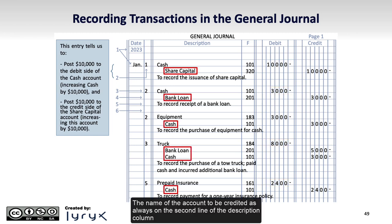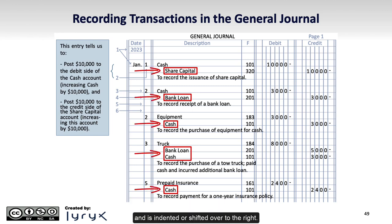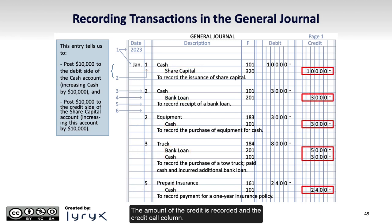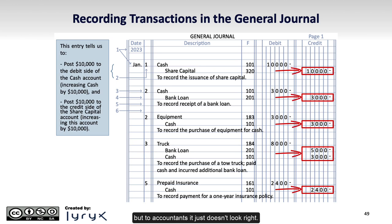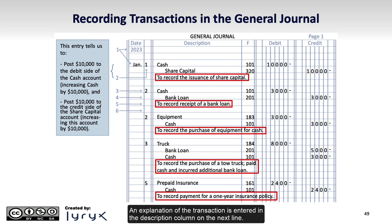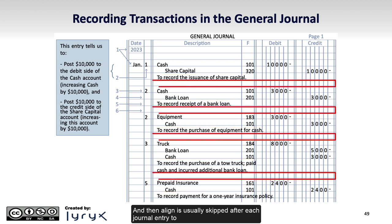The name of the account to be credited is always on the second line of the description column and is indented or shifted over to the right. Accounts to be credited are always indented in this way in the journal. The amount of the credit is recorded in the credit column. Note, it's not that creating a journal entry where the credit is first is wrong, but to accountants it just doesn't look right. An explanation of the transaction is entered in the description column on the next line and generally is not indented. A line is usually skipped after each journal entry to separate the individual entries and the date of the next entry recorded.